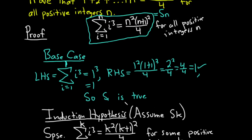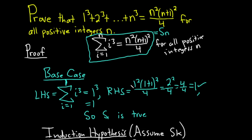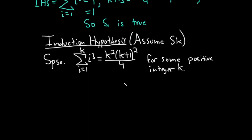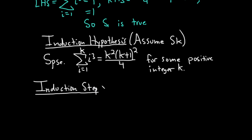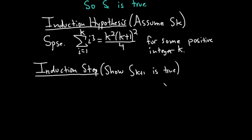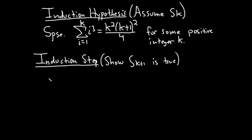We just take k and plug it into the statement. The next step is the induction step — this is the hardest step in the proof. In the induction step, we have to show that our statement is true when n equals k plus 1. It's really important to indicate to the reader what you're trying to show, so I'm going to write down 'claim.'